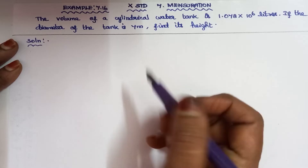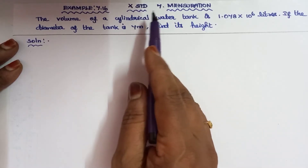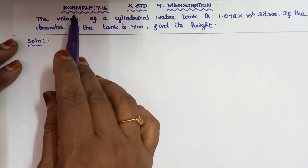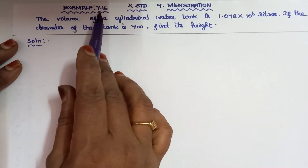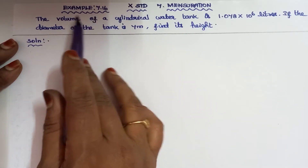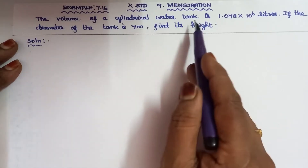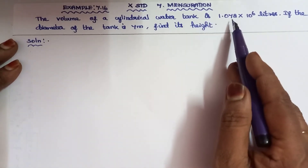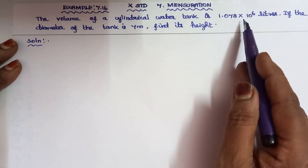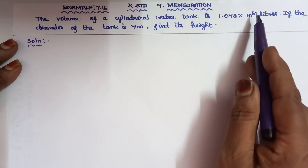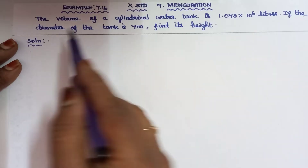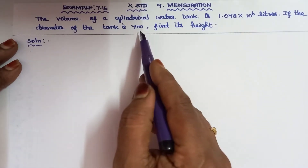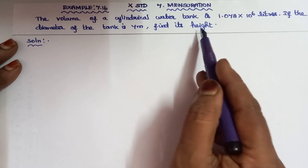Good morning everyone. Class 10, Standard 7, Chapter Mensuration, Example 7.16. The volume of a cylindrical water tank is 1.078 into 10 to the power 6 liters. If the diameter of the tank is 7 meters, find its height.